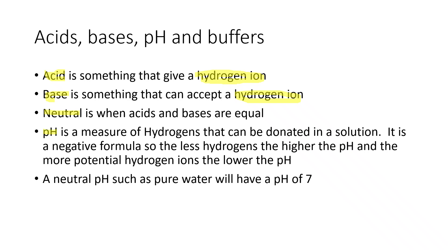pH is a measure of hydrogen — P stands for potential, H for hydrogen. It looks at how many hydrogens something can give. The formula is based on a negative log base 10, so as something gets more acidic it has a lower pH. More acidic means more hydrogens but a lower pH number.